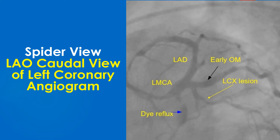Abbreviations used: LMCA – left main coronary artery; LCX – left circumflex coronary artery, with a lesion in LCX marked by a yellow arrow; LAD – left anterior descending coronary artery; early OM – early obtuse marginal branch of the LCX. Dye or contrast reflux into the aorta from LMCA is seen. Absence of dye reflux would indicate left main ostial disease or, rarely, spasm.